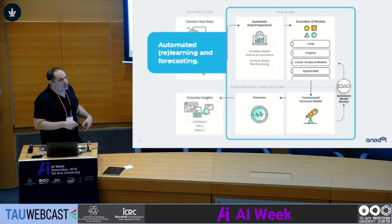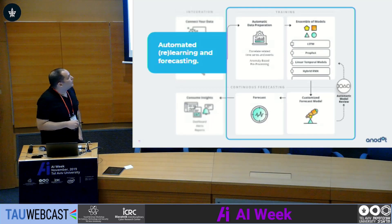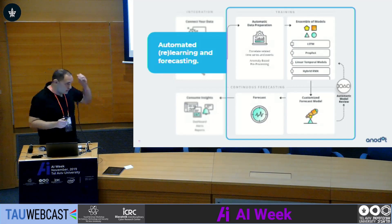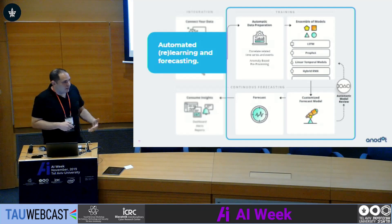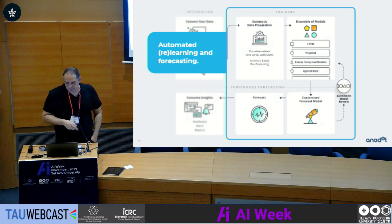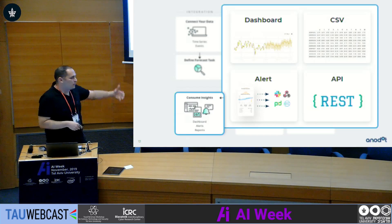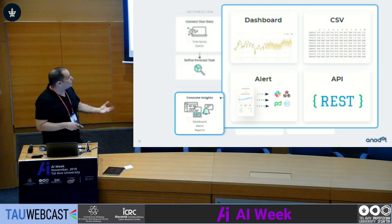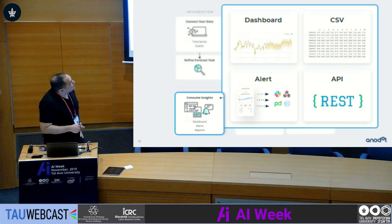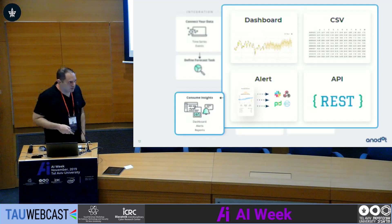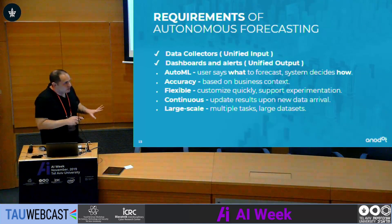Then there is the ongoing phase of forecasting where the models stay the same and only new data comes in. We apply the saved model to this new data in order to create new forecasts. Finally, once we have a live forecasting task producing results, we consume it via dashboards where you can download CSV reports, push alerts, or pull results from an API if you want to automate based on them.